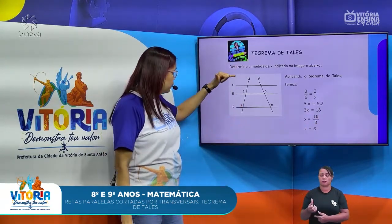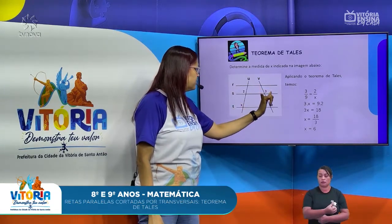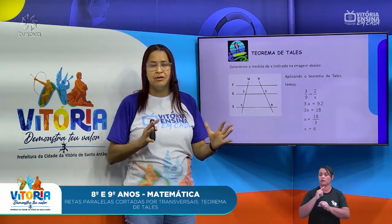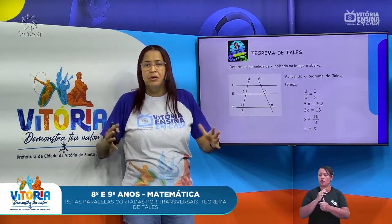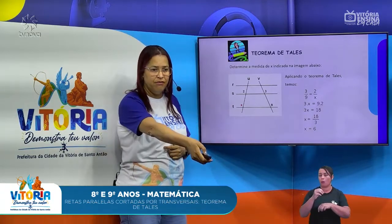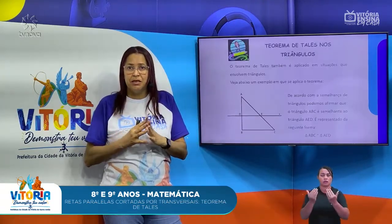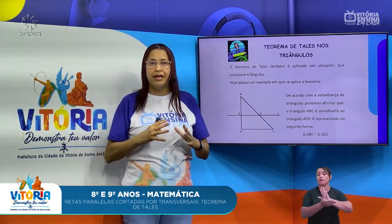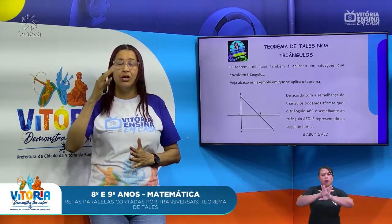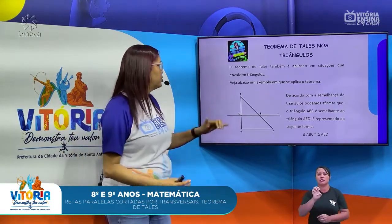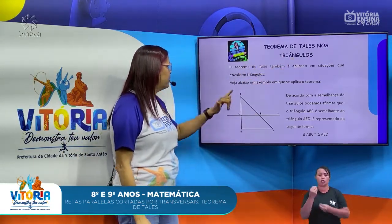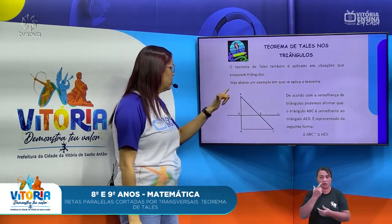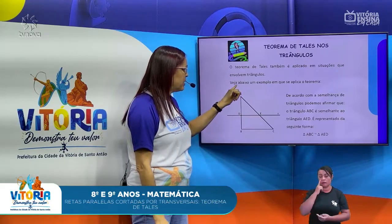Então, eu tenho aqui que 2 está para 6, assim como 3 está para 9. Ele diz aí que há uma proporção em relação a esses dois valores. É importante que a gente perceba isso. Para ampliar esse conhecimento do Teorema de Tales, trabalhando com os triângulos: o Teorema de Tales também é aplicado em situações que envolvem triângulos. Veja abaixo um exemplo em que se aplica o Teorema.